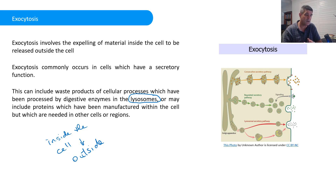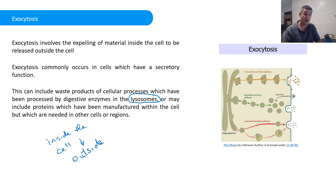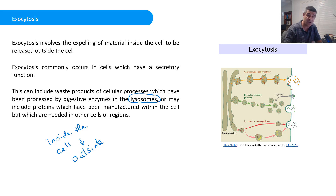The key here is that we can have material outside the cell moving in through endocytosis, and material inside the cell moving out through exocytosis. Both of these processes are active and involve either the internal or external cell membrane. Hopefully that gives you a little overview of the two key types of active transport processes and contrasts them with the passive processes we saw in diffusion and osmosis. Thanks for watching.